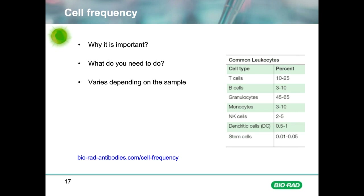If you are sorting, the frequency will determine the time taken to complete your sort, which can impact on the recovery of viable cells if the sort takes a long time. The frequency of cell populations will also differ depending on the tissue sample and species — for example, granulocytes are much more abundant in human blood compared to murine blood. Another impact of cell frequency can be seen if you have a complex gating strategy.